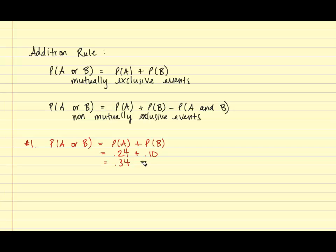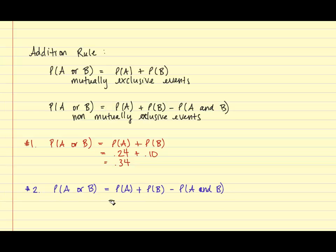For problem number two, we are trying to find the probability that a person will be entertained by books or movies. Since 18% of individuals are entertained by both books and movies, we are going to use the second formula because there are people who share both events: P(A or B) = P(A) + P(B) - P(A and B). The probability of A is 0.28, plus the probability of B is 0.37, minus the probability of A and B which is 0.18. Our final answer is 0.47.